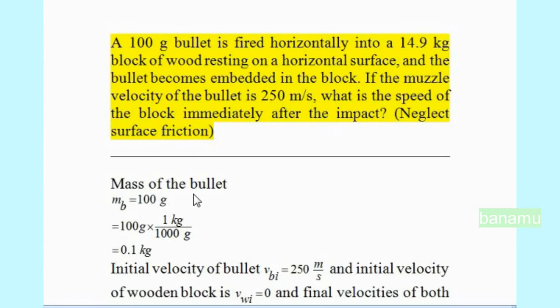Mass of the bullet MB is equal to 100 grams. Convert grams into kg. So MB is equal to 100 grams times 1 kg by 1000 grams. MB is equal to 0.1 kg.